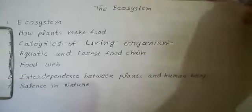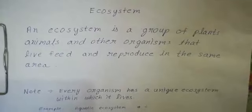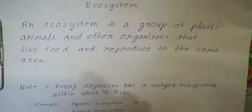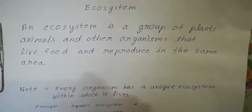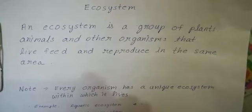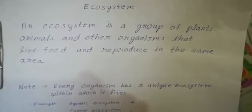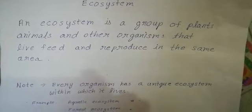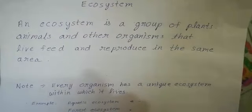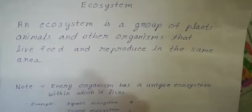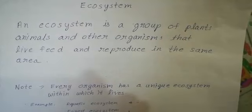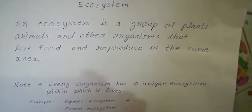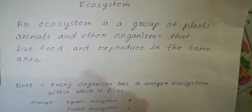Starting from the first topic: Ecosystem. Ecosystem is a combination of two words, eco and system. Eco means home; system means organized body or whole. An ecosystem is a group of plants, animals and other organisms that live, feed and reproduce in the same area. Note: every organism has a unique ecosystem within which it lives.